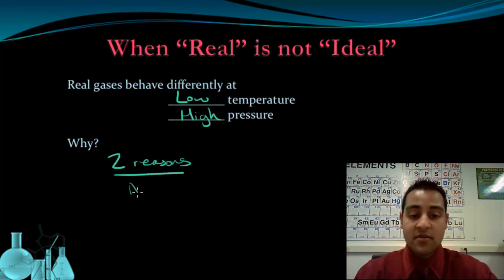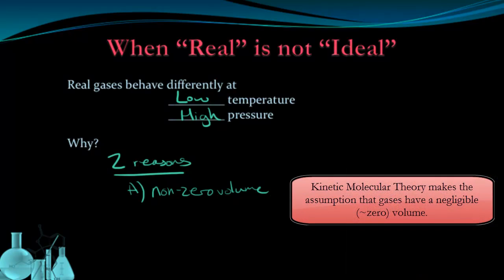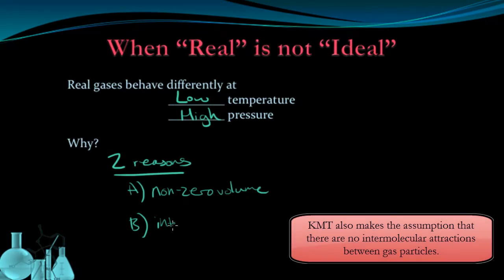The first reason, reason A, is that gases in reality have a non-zero volume. Whereas in the kinetic molecular theory, we assumed that all gases, the volume was negligible or zero. The second reason, reason B, is that the kinetic molecular theory says that there are no intermolecular attractions. But intermolecular attractions, or intermolecular forces, definitely exist.